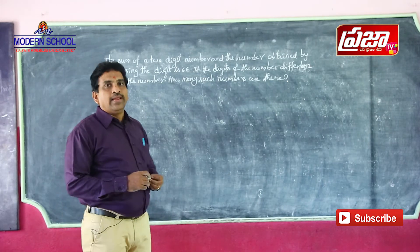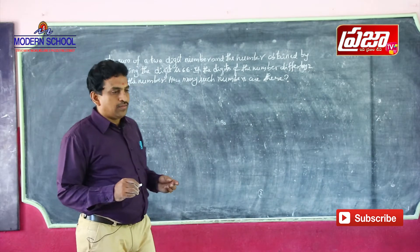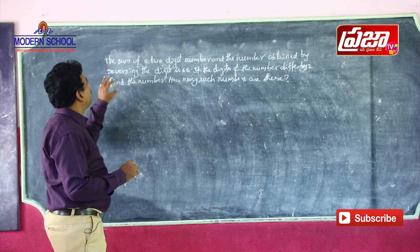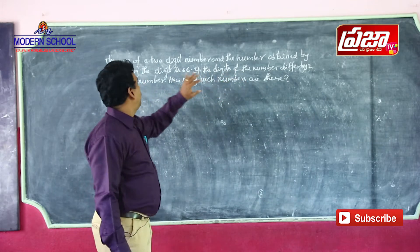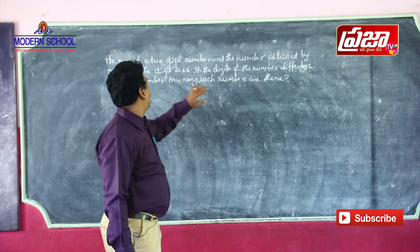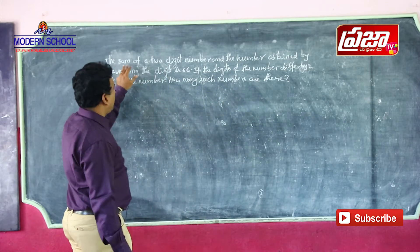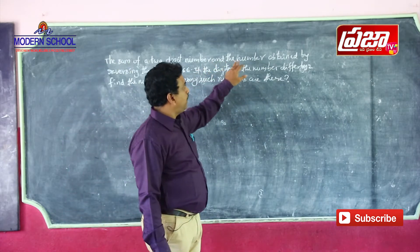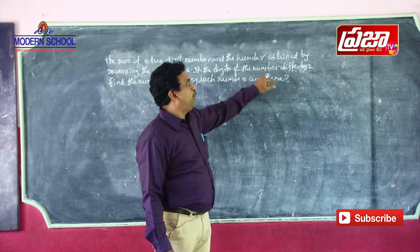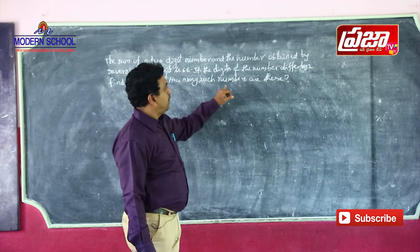Now we discuss one important problem in linear equations in two variables. Look at the problem: The sum of a two-digit number and the number obtained by reversing the digits is 66. If the digits of the number differ by 2, find the number. How many such numbers are there?